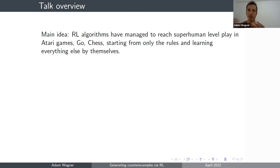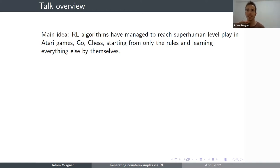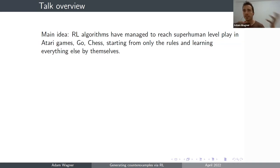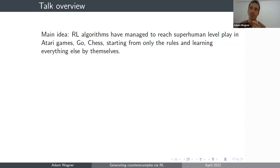Today I will tell you a little bit about how to find counterexamples to various conjectures in mathematics by using some reinforcement learning methods. The main idea is that companies like DeepMind have created programs that can play chess, Go, and Atari games at superhuman levels. These programs started from only knowing the rules of the game and figured out everything else just by playing many, many times by themselves.